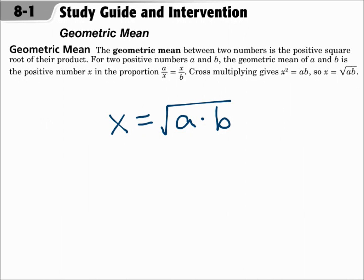This is lesson 8.1, Geometric Mean. Your objectives are to find the geometric mean between two numbers, and to solve problems involving relationships between parts of a right triangle and the altitude to its hypotenuse.